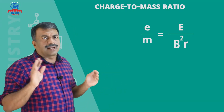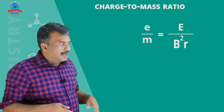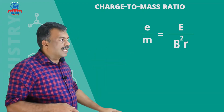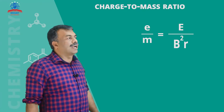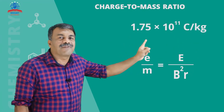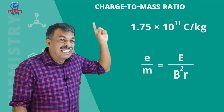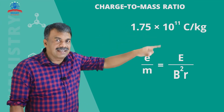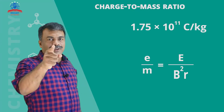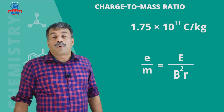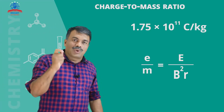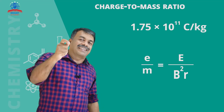This gives the value of 1.75 into 10 to the power 11 coulombs per kilogram. That's the charge to mass ratio value: 1.75 × 10¹¹ C/kg.